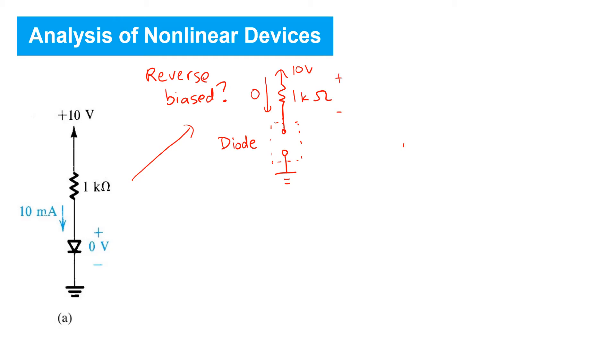And hence, we would see a voltage of 10 volts appearing in the forward direction across the diode. However, we know that this is impossible.